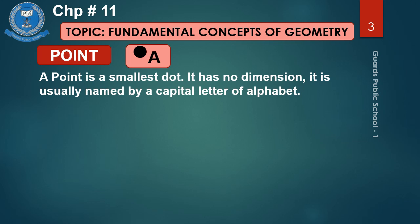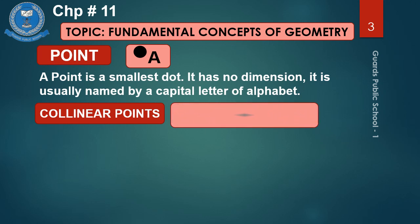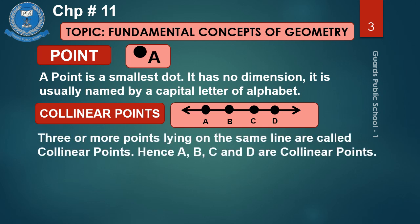Number 2 is collinear points. You see the diagram here — A, B, C and D. These are four points. What are collinear points? Three or more points lying on the same line are called collinear points. Hence A, B, C and D are collinear points.